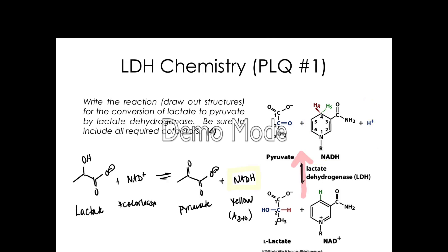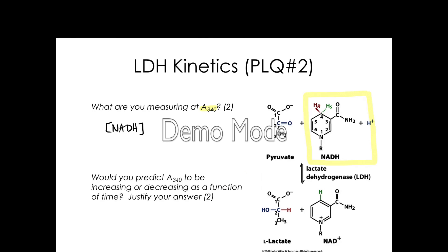If we look back at our previous equation, we are actually going to be producing NADH — so NADH will be a product. NADH is appearing, so we would predict that we will see an increasing concentration of NADH and therefore an increase in A340.